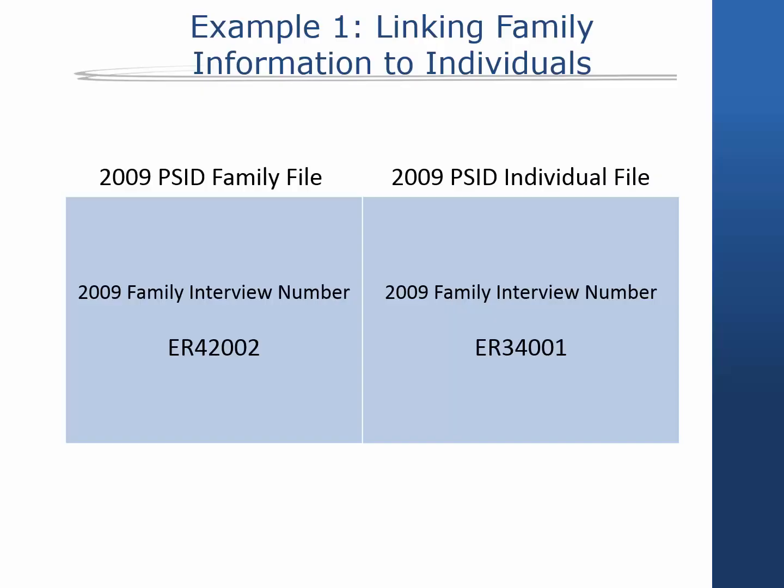If you wanted to link family level information to all individuals in the 2009 individual file, you would use the variable ER42002, the 2009 family interview number from the family file, with the variable ER34001, the 2009 family interview number from the individual file. Note that the data center will automatically make this merge for you if you include both family level and individual level variables in your data cart.